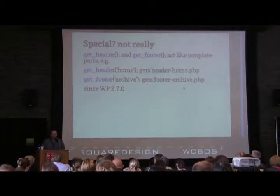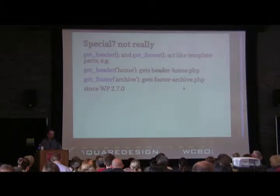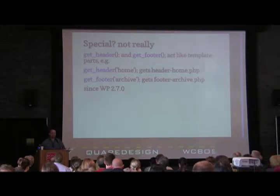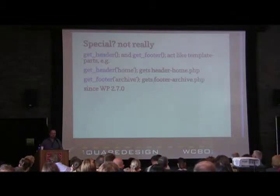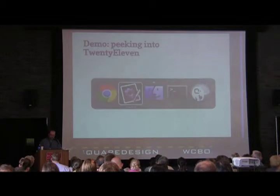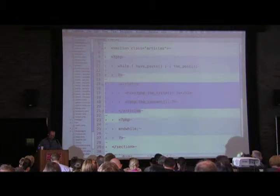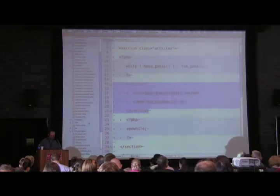Going back to header, footer, and sidebar — are they really special? get_header and get_footer act like get_template_part because they accept a second slug parameter. If I pass 'home' to get_header, it looks for header-home.php. You can have a footer-archive, left sidebar, right sidebar, etc. The new 2011 theme gets really clever with this — they use 'content-' prefix and customize based on whether it's an image type, a gallery, intro text, or a quote.